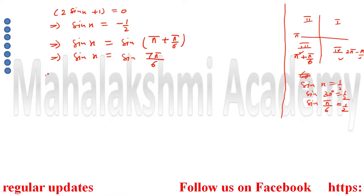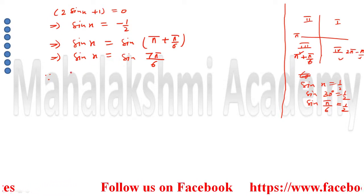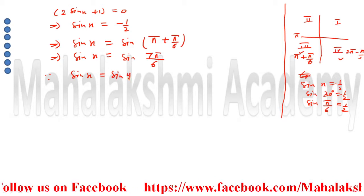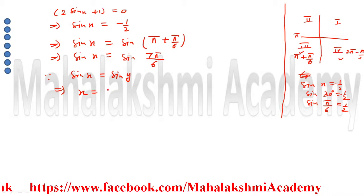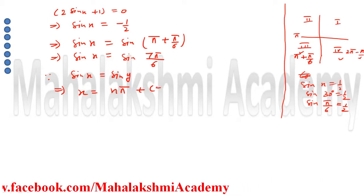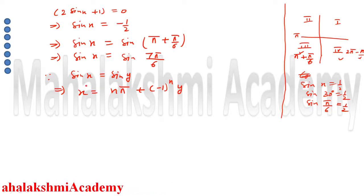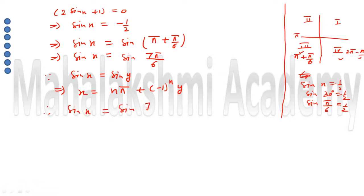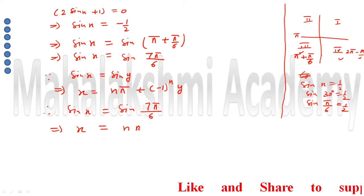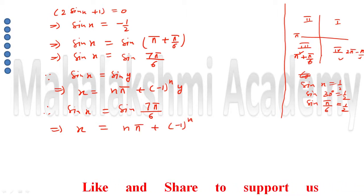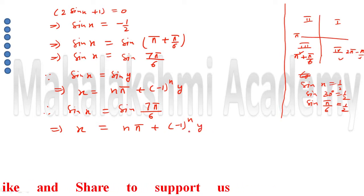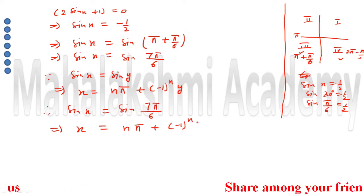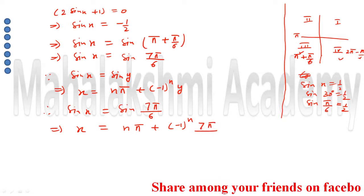Now we write the formula for the sine equation. Since sin x is equal to sin y, the general solution is x is equal to nπ plus (−1)ⁿ y. This is the formula. For our equation sin x is equal to sin(7π/6), we replace y with 7π/6. So x is equal to nπ plus (−1)ⁿ times 7π/6.